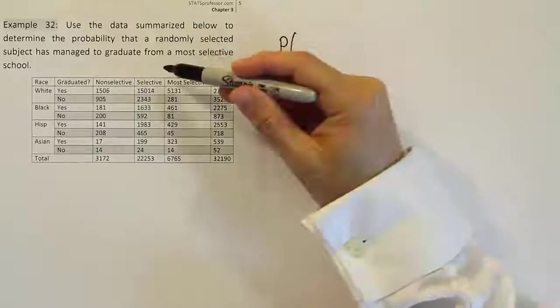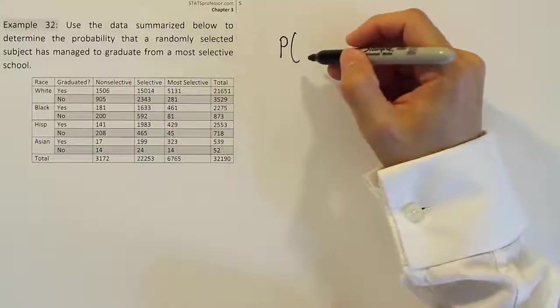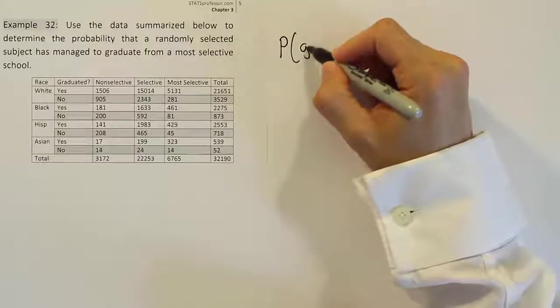The probability of what they're asking for. They're asking for graduates from most selective schools. We're looking for the probability that this person selected graduated.